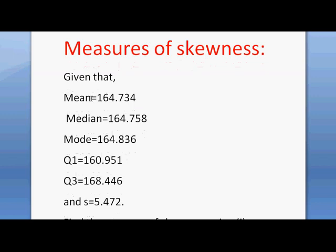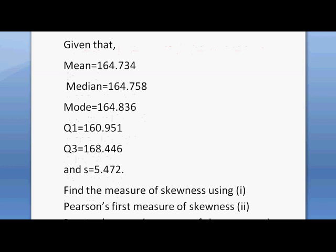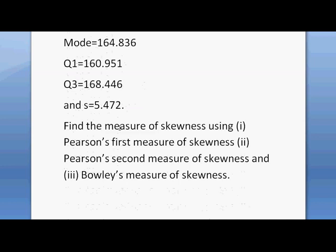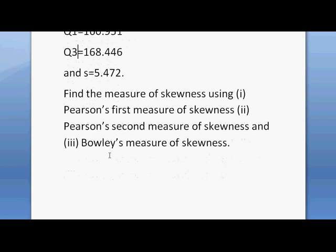The question is: given that mean equals 164.734, median equals 164.758, mode equals 164.836, Q1 (first quartile) equals 160.951, Q3 (third quartile) equals 168.446, and standard deviation S equals 5.472. We need to find the measure of skewness using: (1) Pearson's first measure of skewness, (2) Pearson's second measure of skewness, and (3) Bowley's measure of skewness.